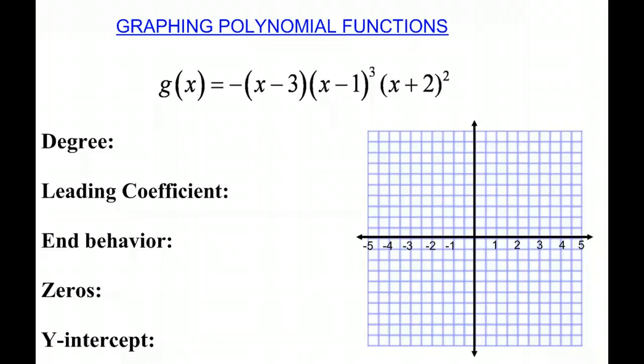So we're going to look at our degree. And if we remember about degrees, we have to add them up when they're factored like this. So we have a 1 here, a 3, and a 2, which makes a degree of 6, which is an even degree.